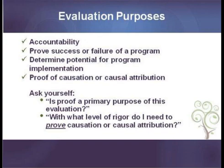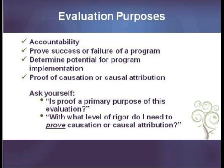There are many, many different purposes for an evaluation. Sometimes it's for accountability. Sometimes it's to prove success or failure of the program. In other cases, it might be just trying to figure out if we could implement the program with fidelity. When the purpose is proof of causation, design becomes an especially important decision because it raises complex issues that are both time-consuming and expensive. So you always want to ask yourself: is proof a primary purpose of this evaluation, and with what level of rigor do I need to prove causation or causal attribution?